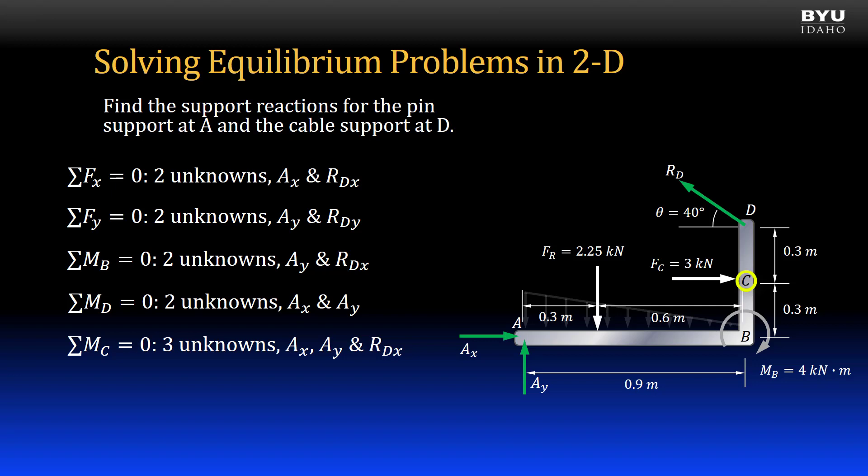If I sum moments to zero about point C, I will have three unknown variables: Ax, Ay, and the horizontal component of RD. The line of action of the vertical component of RD passes through point C and is not included. Let's consider one more option, summing moments to zero about point A.